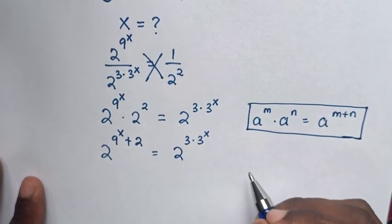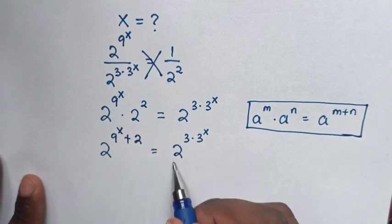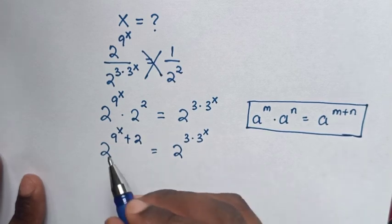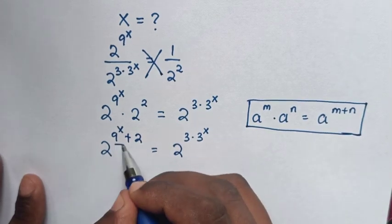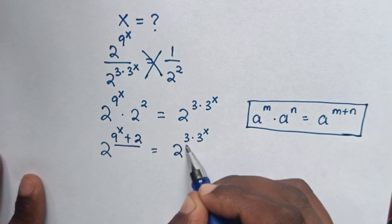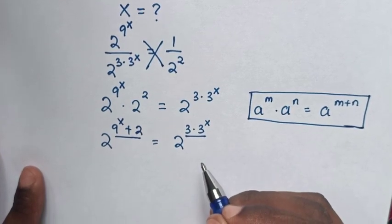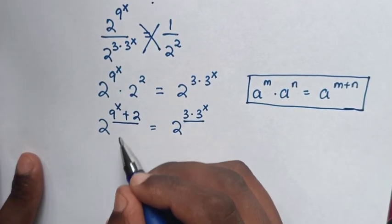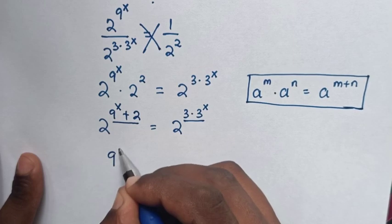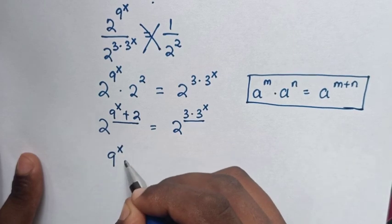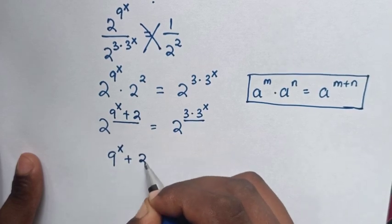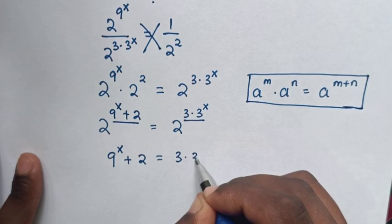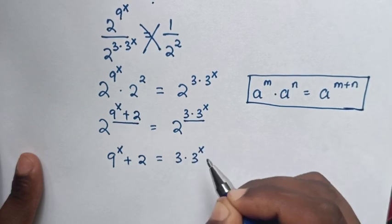Then in the next step, because we have the same base but different powers, we will compare these powers. So it will be 9^x plus 2 is equal to 3 times 3^x.